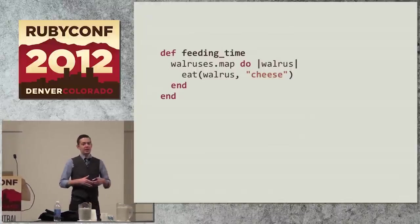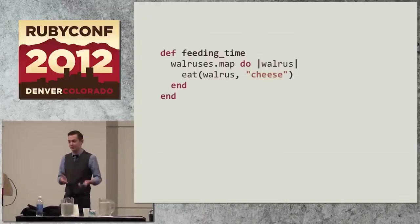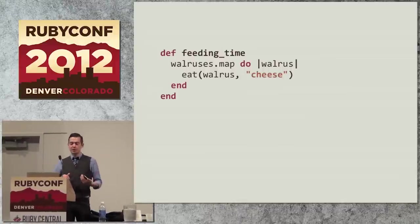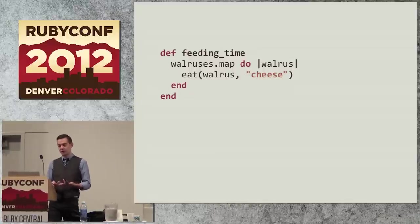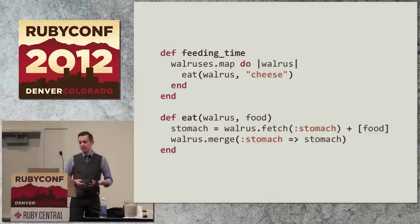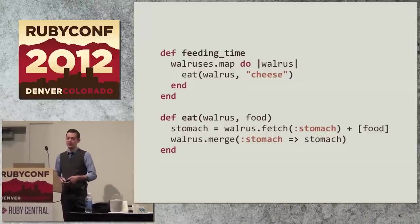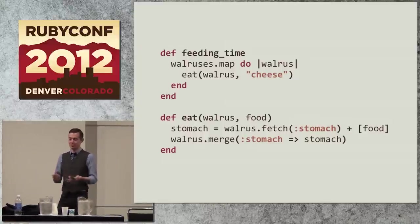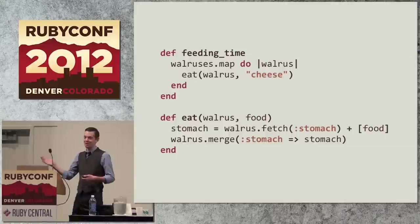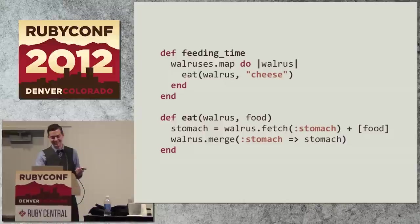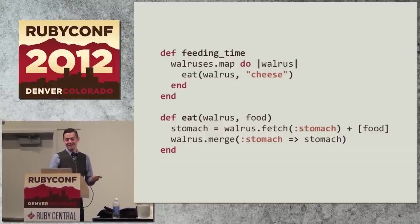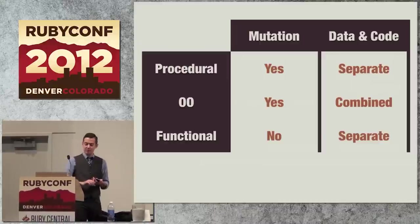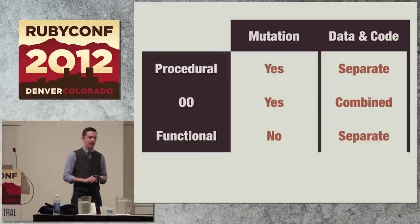If we add functional to this, instead of doing an each, we do a map. We're going to take all the walruses and produce new walruses that are slightly different. So for each of them, we're going to call eat on the walrus and some food, some cheese. And I'm going to use a hash for the walrus, an array for the stomach, and strings for the food. So in the eat function, it's kind of weird, but we build a new stomach that's the old stomach plus the new food. And then we build a new walrus that's the old walrus with the new stomach. You can see why OO models real-world things a little better than functional programming does. So that's functional. Nothing is being mutated. We have no mutation, but data and code are separate. They are not combined into single things.